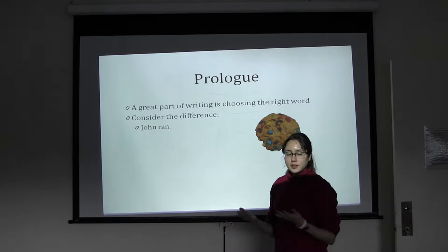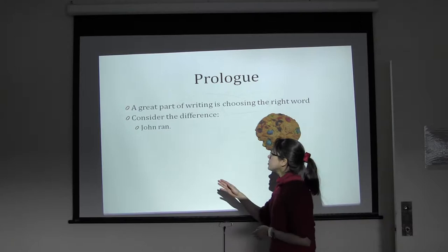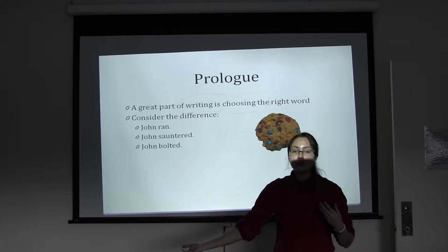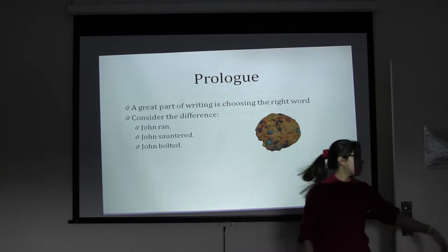We can consider a very simple sentence: 'John ran' — getting it on a level, easily understood — and try to make some changes to it. One thing we can do is look at synonyms for the word 'ran'. For example, 'John sauntered' or 'John vaulted' — both of those suggest that John moved, but in a very different manner.